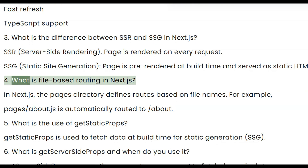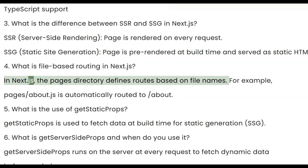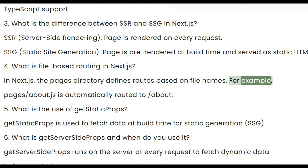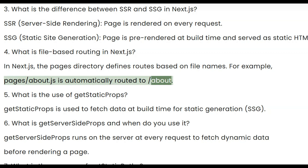Four, what is file-based routing in Next.js? In Next.js, the pages directory defines routes based on file names. For example, pages/about.js is automatically routed to /about.